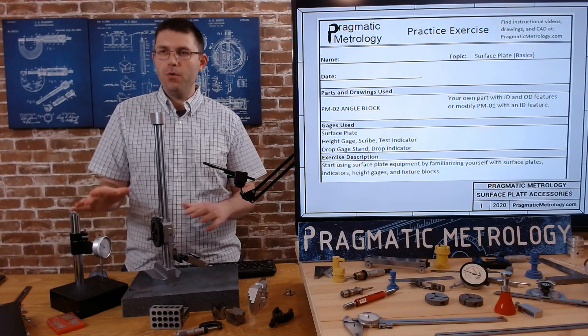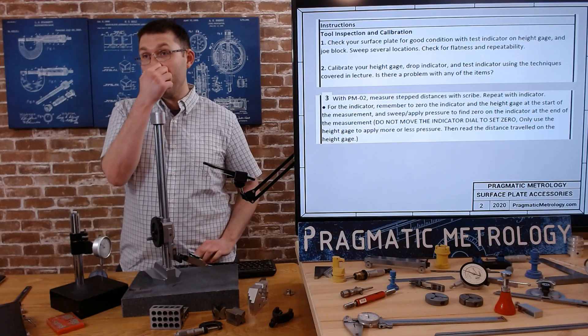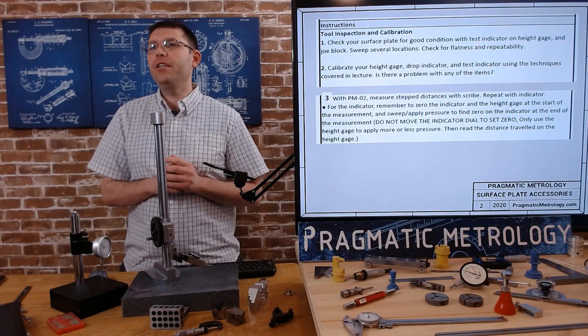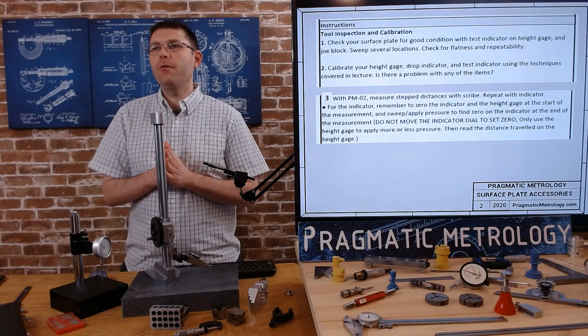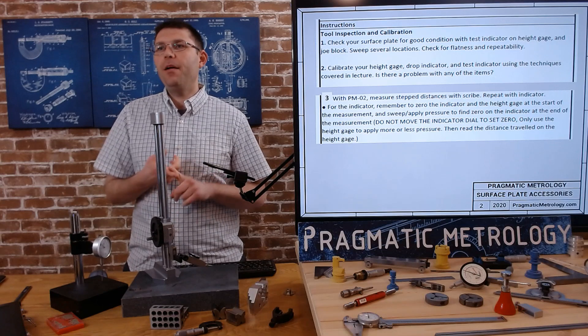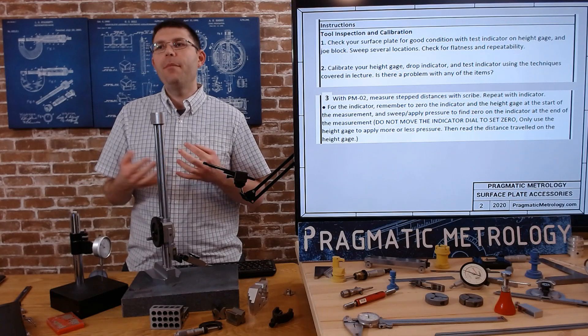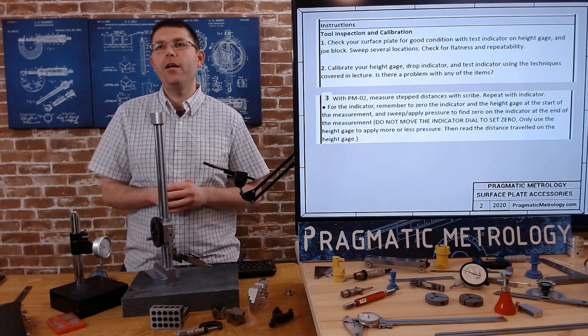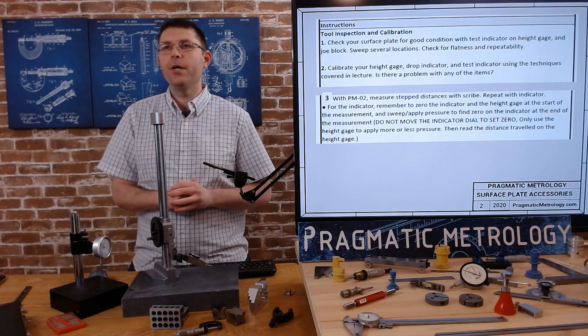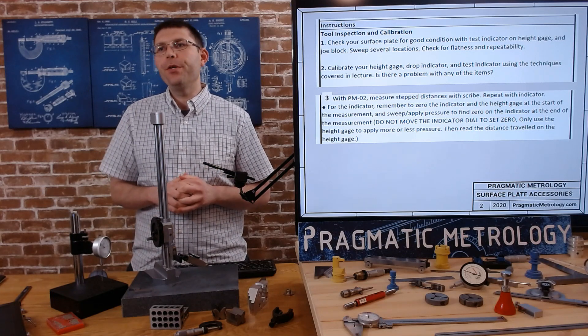Let's look through the exercise real quick so we know what we're doing. We're gonna need our tools and our angle block and we're just going to familiarize ourselves. First thing we're gonna do, check your surface plate for good condition with test indicator on a height gauge and a drill block. Sweep several locations. Next, calibrate your height gauge, your drop indicator, and your test indicator using the techniques.